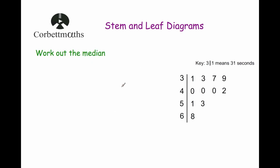Our last question says: work out the median. The great thing about a Stem and Leaf diagram is that all the numbers are arranged in numerical order — 31, 33, 37, 39 and so on. So we don't need to write a list; we can just look at the diagram and cross off the smallest and largest, working inwards to find the middle number. Crossing off 31 and 68, then 33 and 53, then 37 and 51, then 39 and 42, we're left with 40. So the median is 40 seconds.